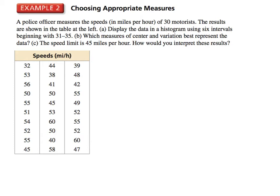Example two: choosing appropriate measures. A police officer measures the speed in miles per hour of 30 motorists — here are all their speeds. Display the data in a histogram using six intervals beginning with 31 to 35. That means we're going to go in intervals of five: 31 to 35, 36 to 40, 41 to 45, and so on.